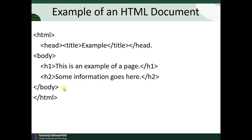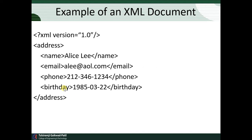Now let's see how we create an XML document. XML has version 1.0 with specific syntax, including version and standalone declarations. After declaring XML version 1.0 and standalone settings, we define a root node. All tags must be included within the root tag. Here, 'address' is the root tag, and within it we have address information: name, email, phone number, and birth date — four items all contained within the root tag.